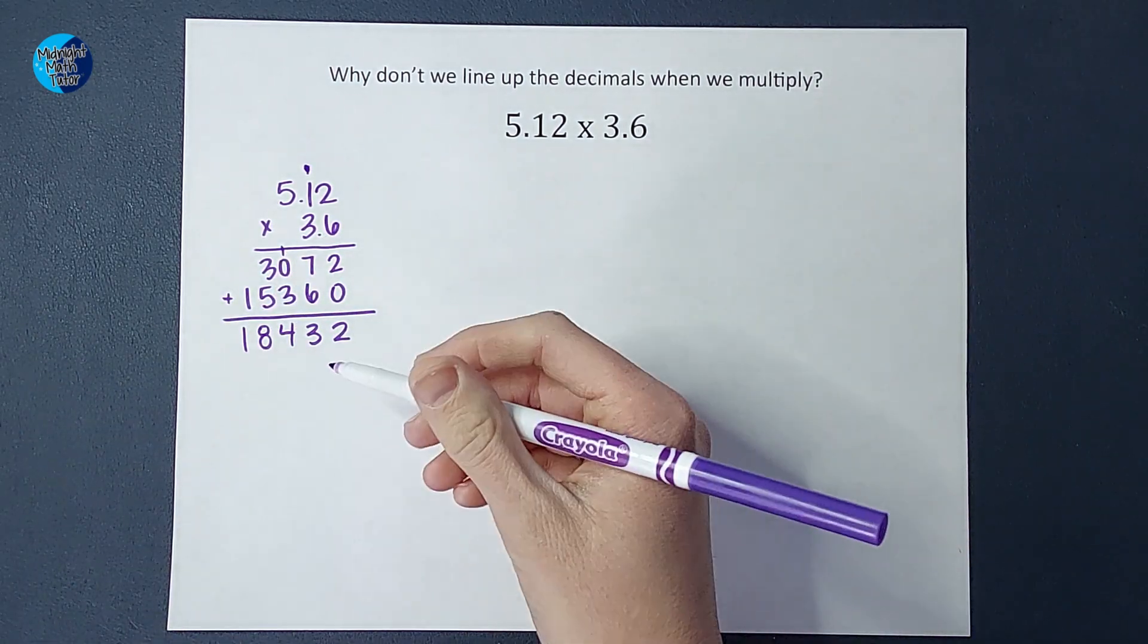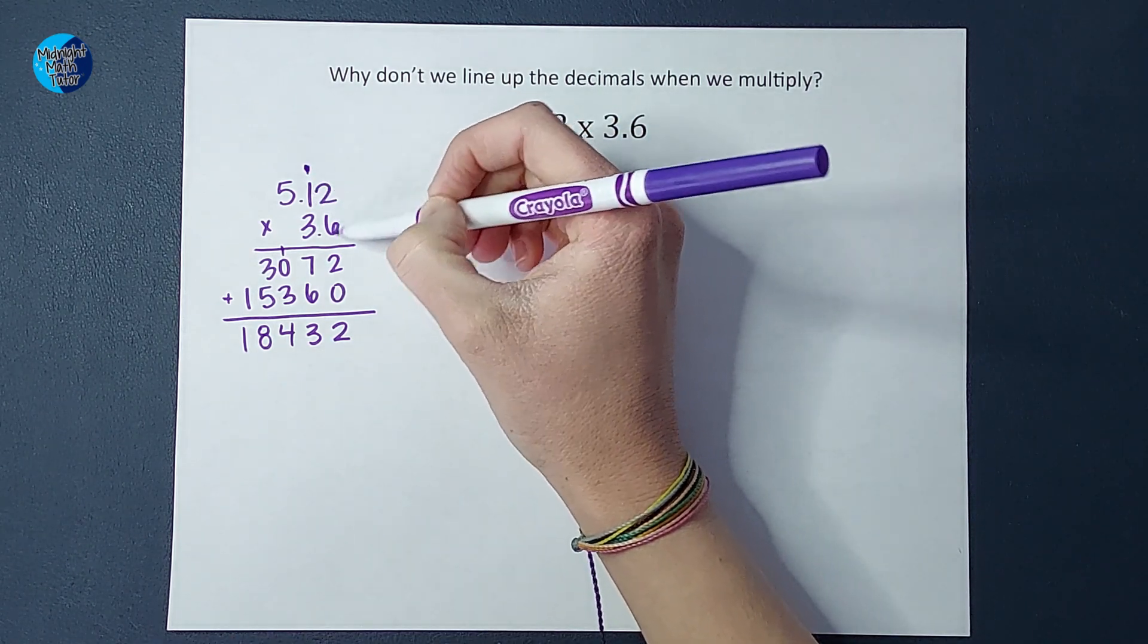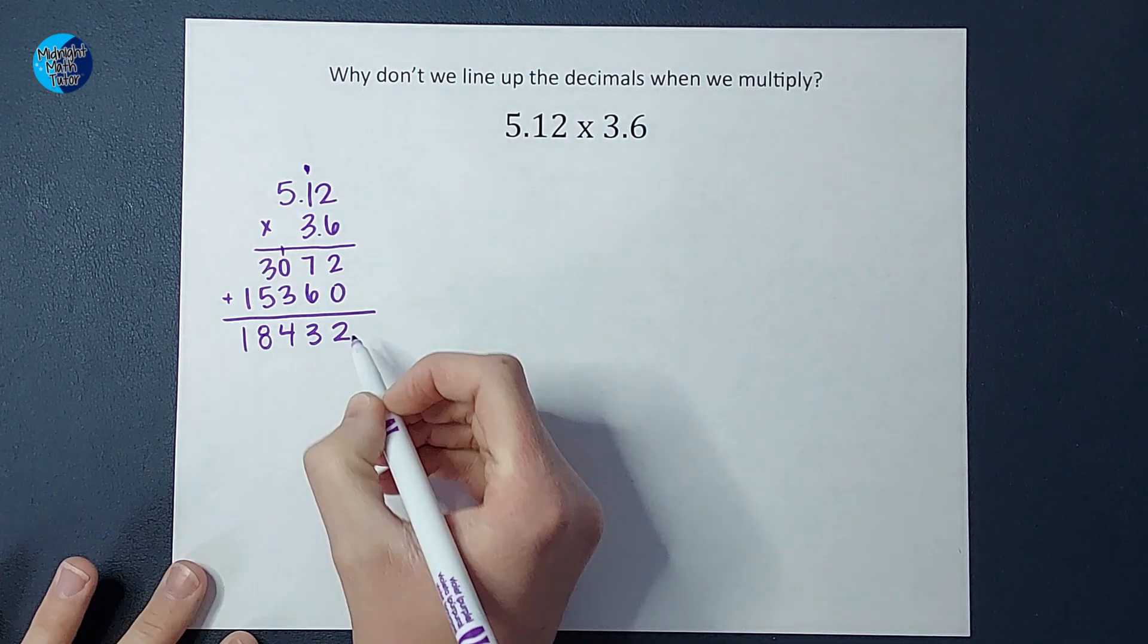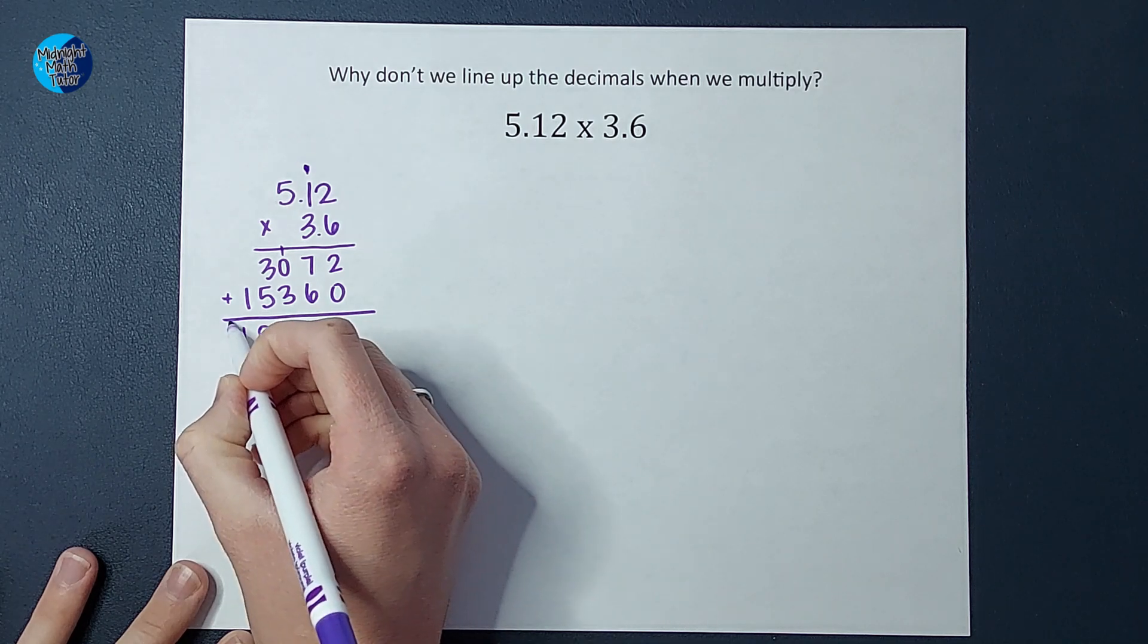Okay, so that is the number I get. And then to figure out where the decimal goes, I count how many are behind the decimal up here. So I have one, two, and three. So I count over one, two, three, and that is where my decimal goes for my answer.